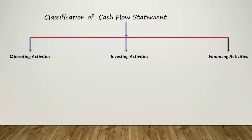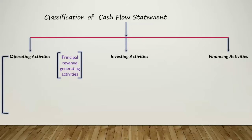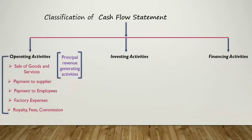Starting with operating activities — these are the principal revenue-generating activities of the enterprise. These activities include sale of goods and services, payment to suppliers, payment to employees, factory expenses, royalty, fees, commission, etc.